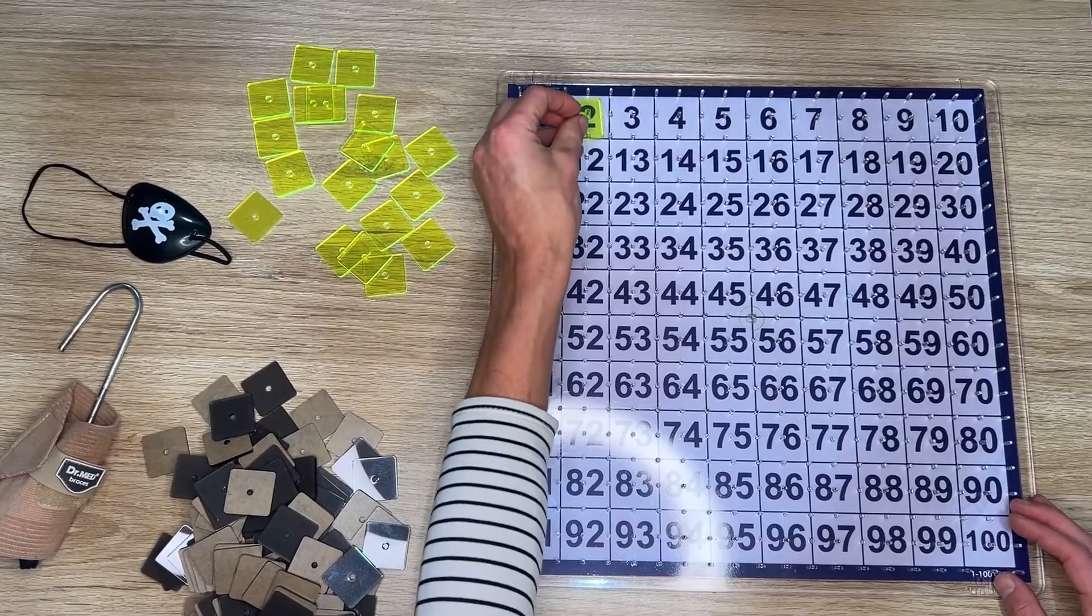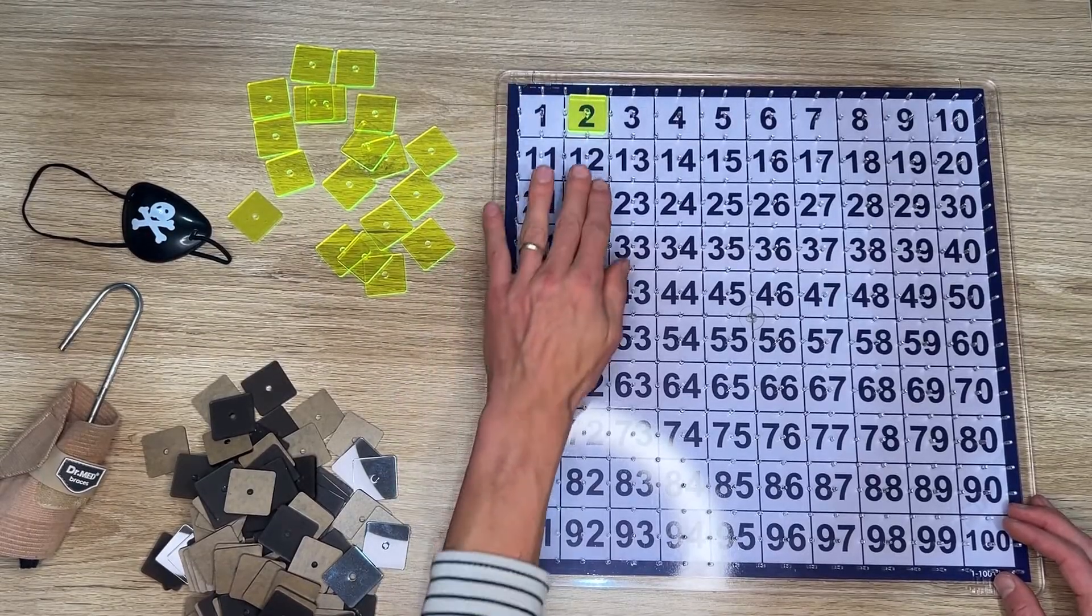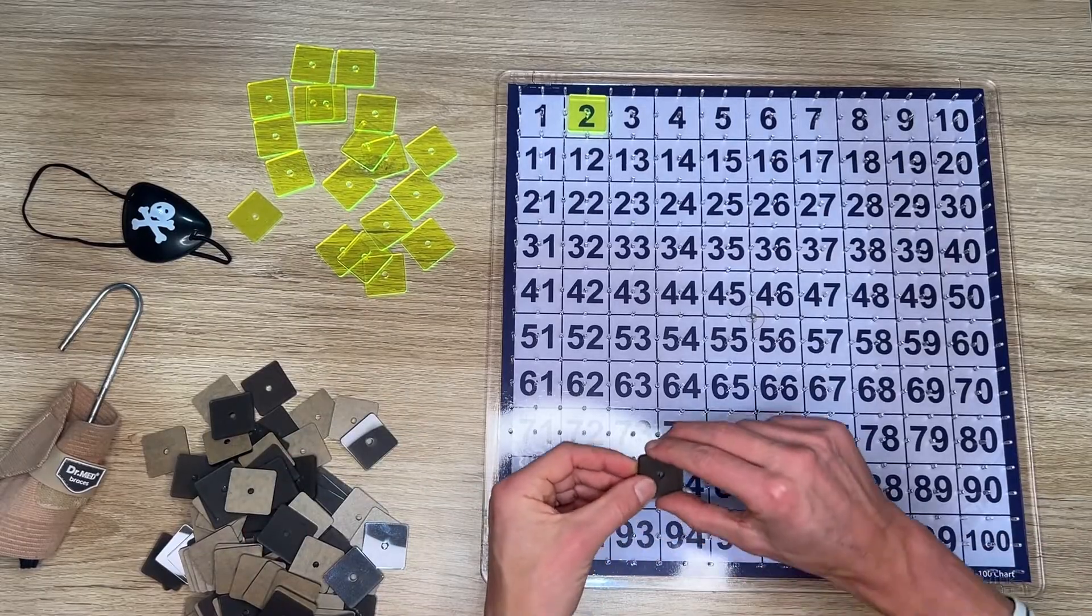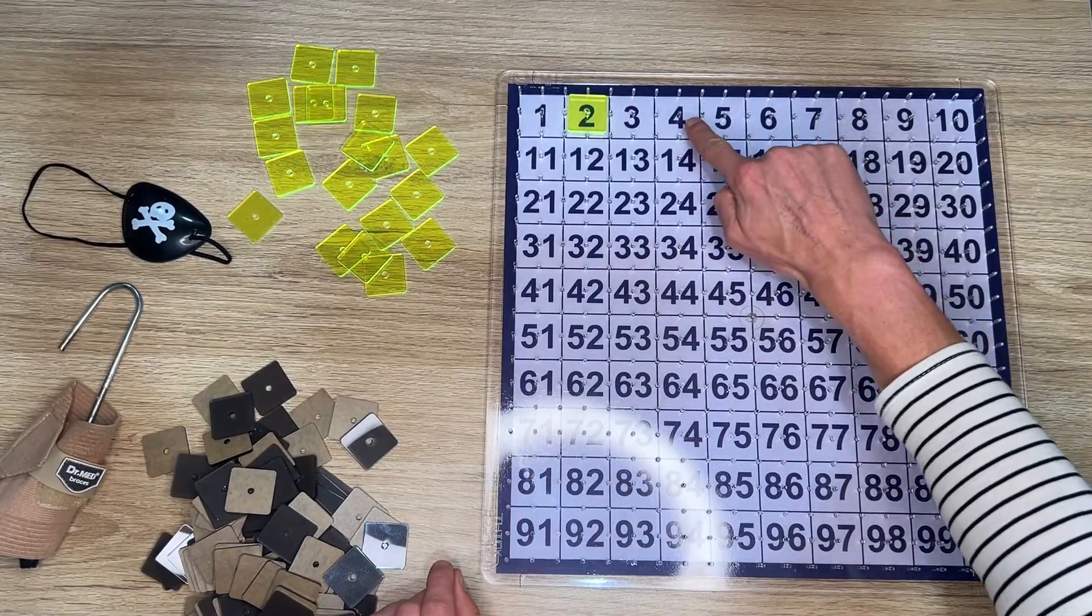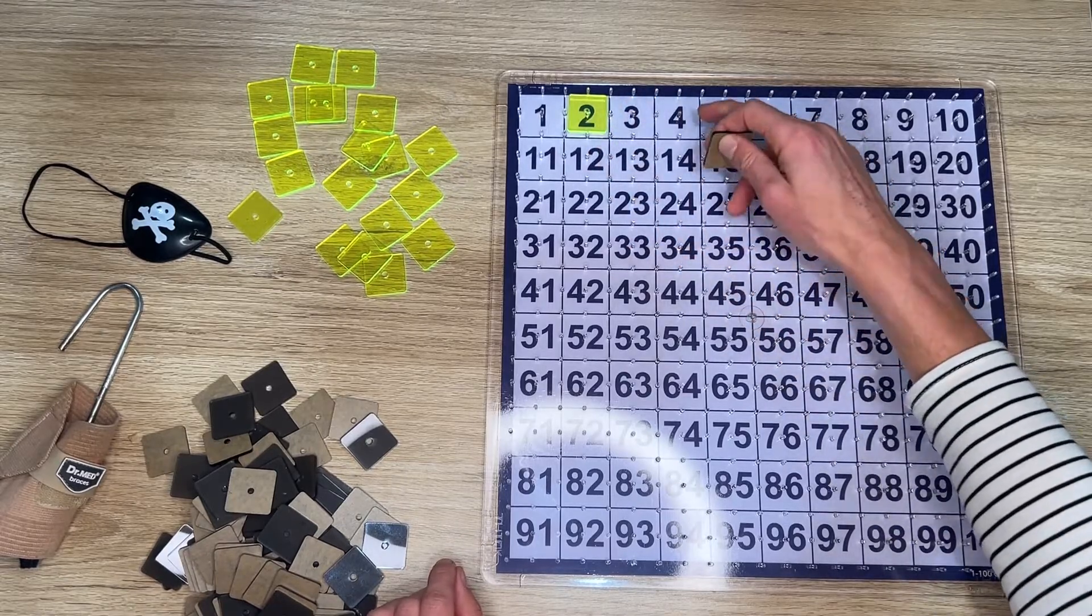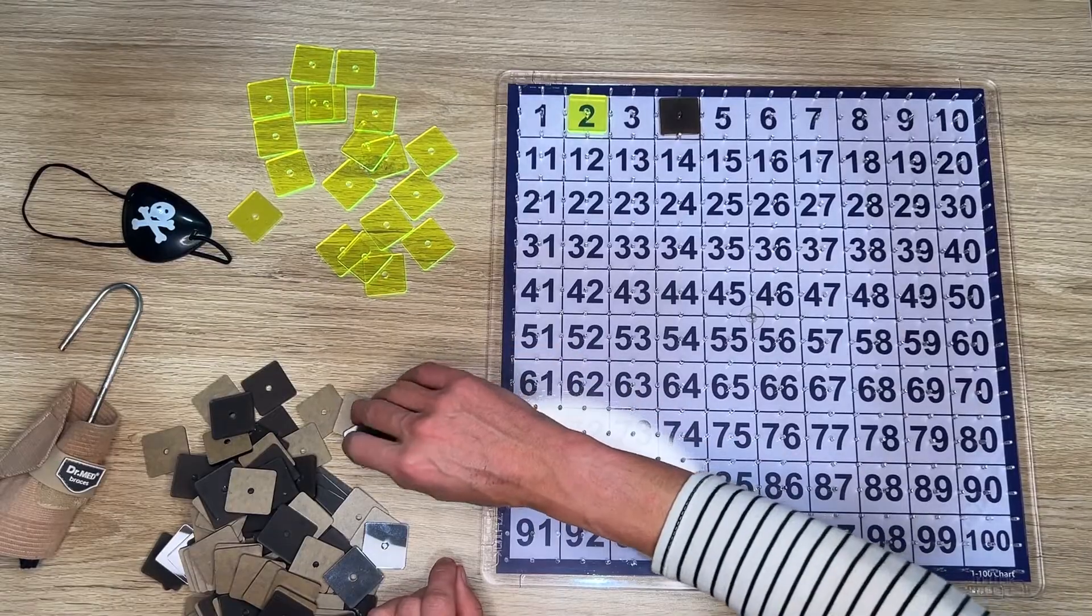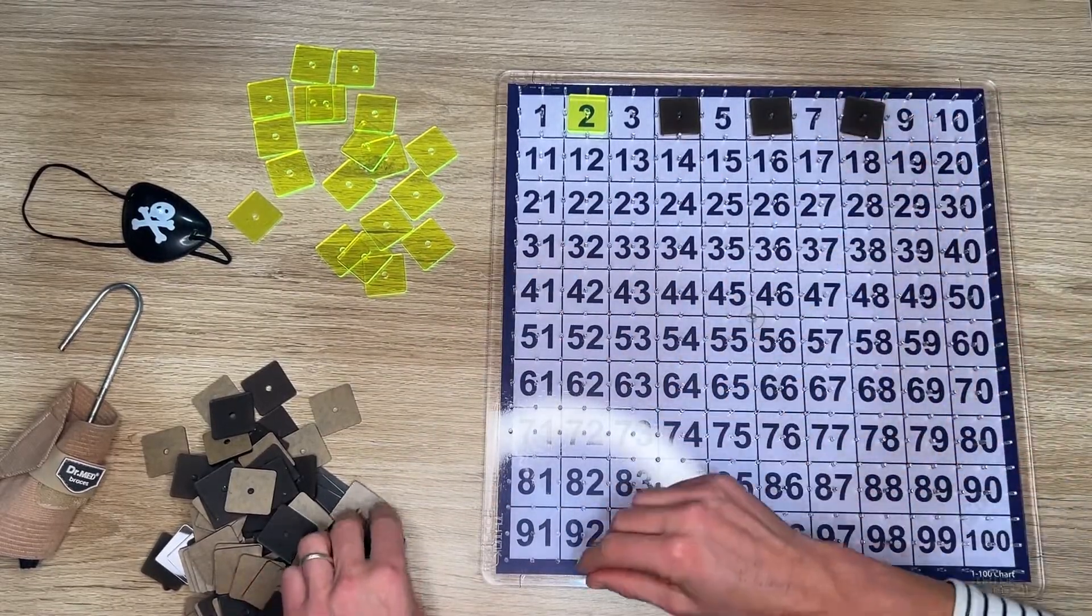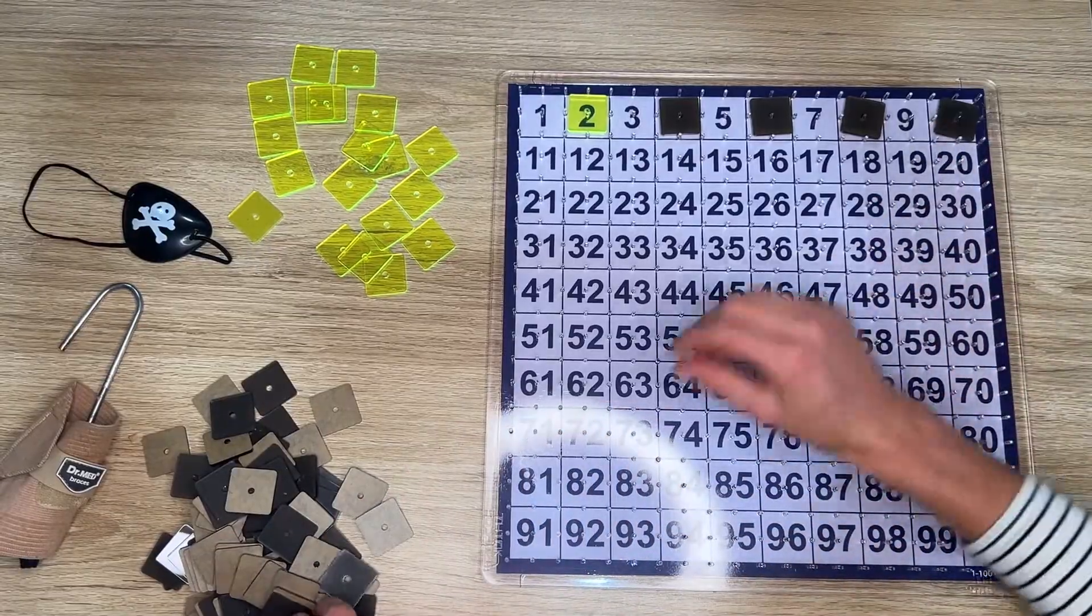So one is neither prime nor composite and we can start with two. Two is a prime number, we'll put a yellow token on there. Then we're going to find all the multiples of two and we're going to cover them in black. So this means they're composite because four will have factors of one, four, and two as well. So it means it's got more than two factors. I'll speed this up so you can see.